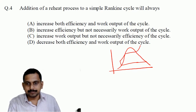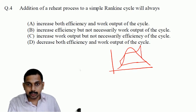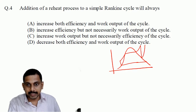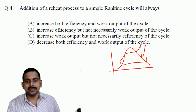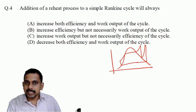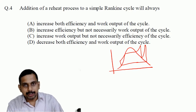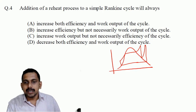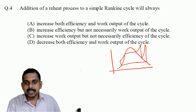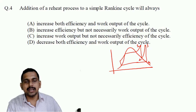In a reheat cycle, you expand steam to near the saturation point and then heat it again — superheat it again — before continuing. This is reheat. When reheat happens, does work output increase? Obviously yes, because work output occurs in two turbine stages: stage 1-2 and stage 3-4, giving work output in both.